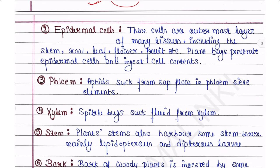Next are epidermal cells — these are the outermost layer of many tissues including the stem, root, leaf, flower, and fruit. Plant bugs penetrate epidermal cells and ingest cell contents. Next is phloem — aphids suck from the sap flow in phloem sieve elements, which are specialized cells of phloem. Aphids suck the liquid sap from phloem sieve elements.